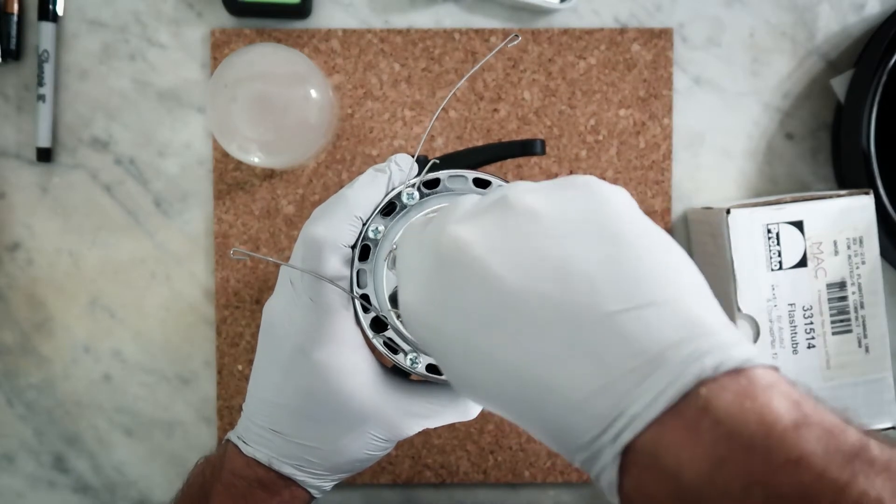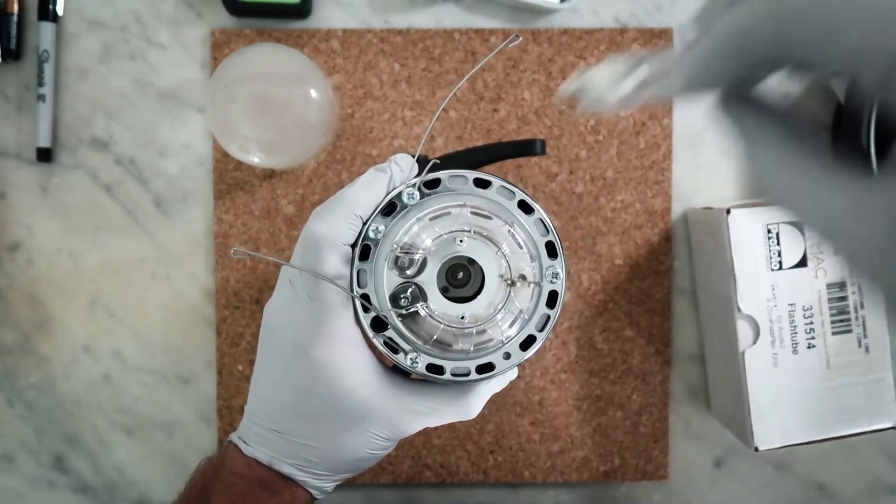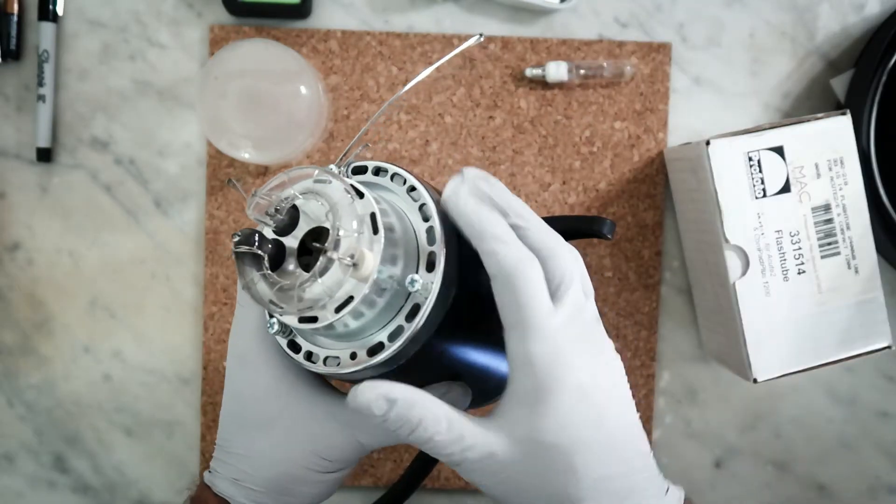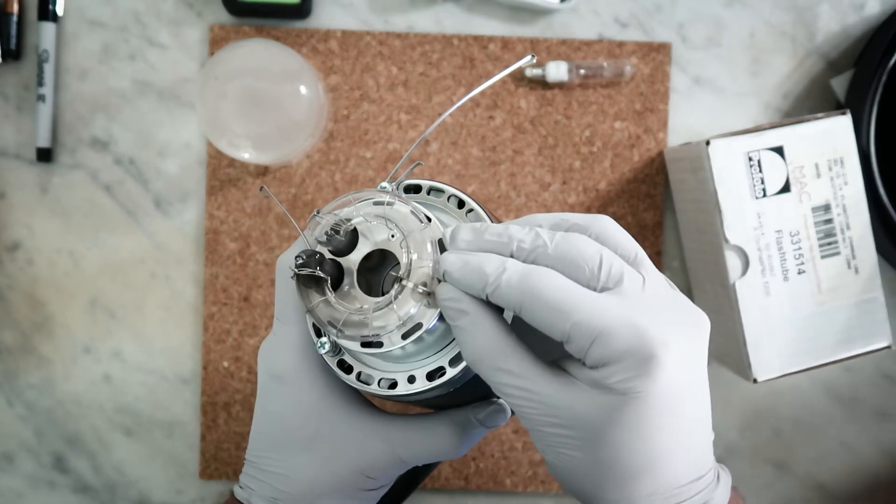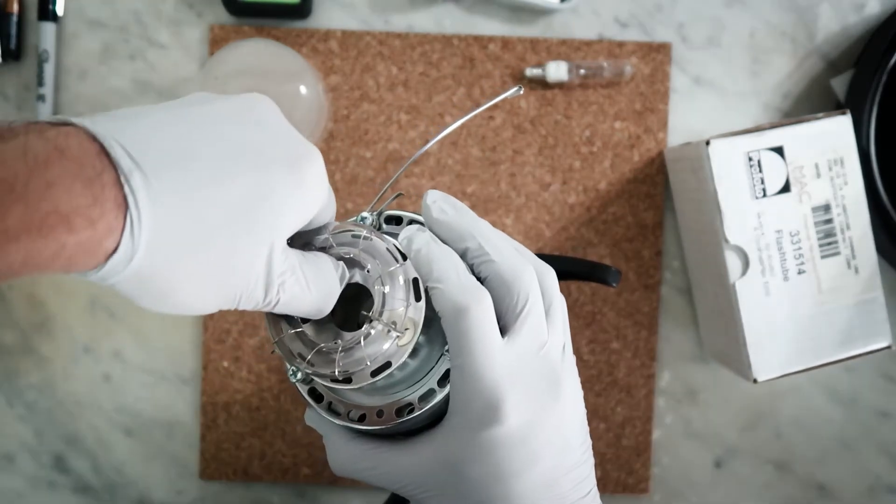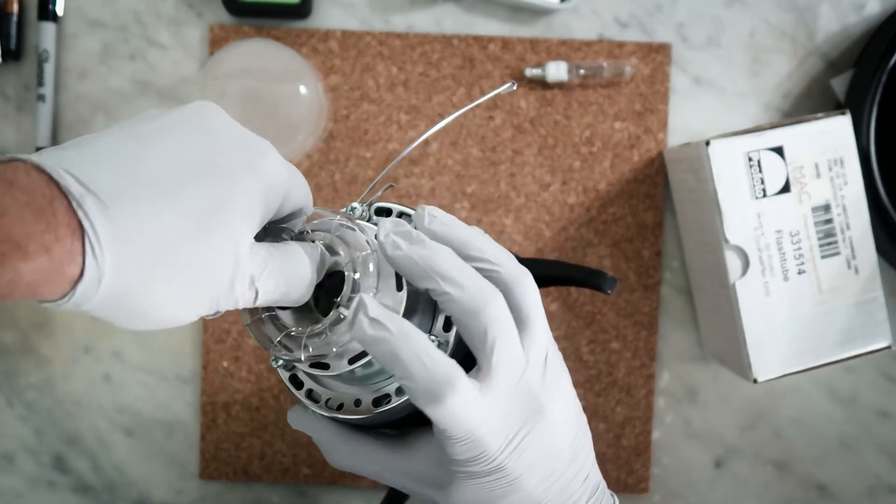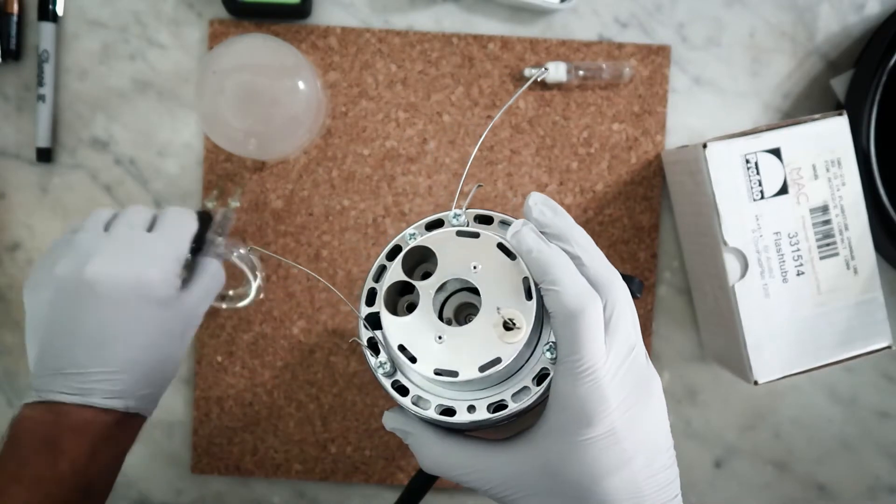First thing you want to do is take out the modeling light because you don't want to break that while you're trying to replace a broken flash tube. On this particular light there's two little metal tabs that you're gonna unfold to get the flash tube out. Grab the flash tube down where the pins go into the light and just give it a steady pull. You don't want to pull too hard or with too much force but it is gonna take a little bit of effort.